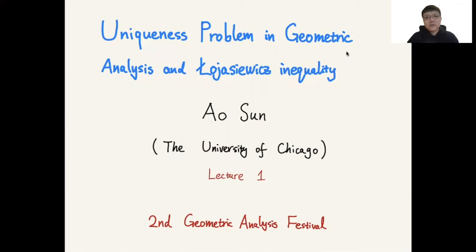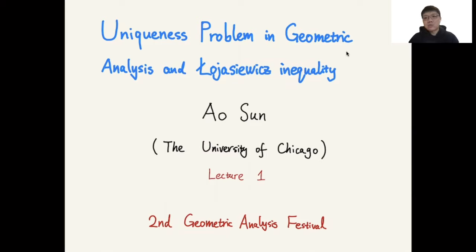In the following several talks, I'm going to discuss the topic of uniqueness problems in geometric analysis and the Łojasiewicz inequality. The Łojasiewicz inequality is a very interesting inequality in real algebraic geometry, and it turns out to have wide applications in many other fields such as geometric analysis. In the 1980s, Leo Simon discovered an application of the Łojasiewicz inequality in geometric analysis, especially in the study of variational problems, and he used it to prove certain uniqueness of geometric objects.